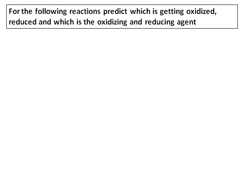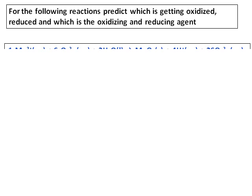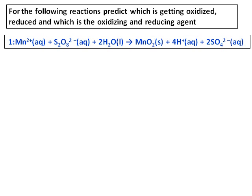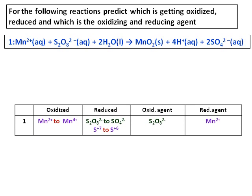For the following reactions, predict which is getting oxidized, reduced and also predict the oxidizing and the reducing agent. The first reaction is the reaction of Mn2+ plus thiosulfate, S2O32-. In the presence of water, it gives you manganese dioxide, hydrogen ions and sulfate. It is a long reaction. Just observe it.